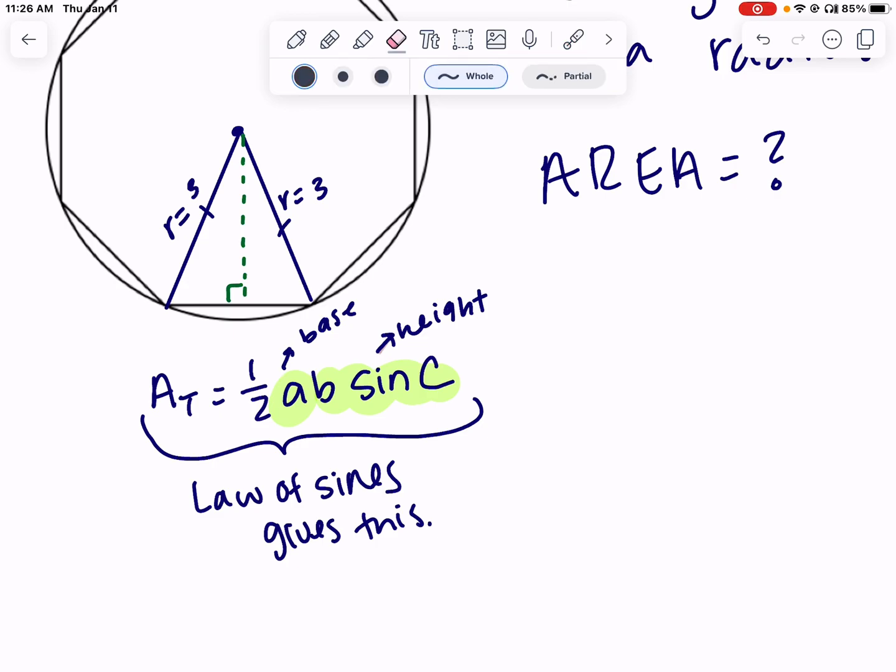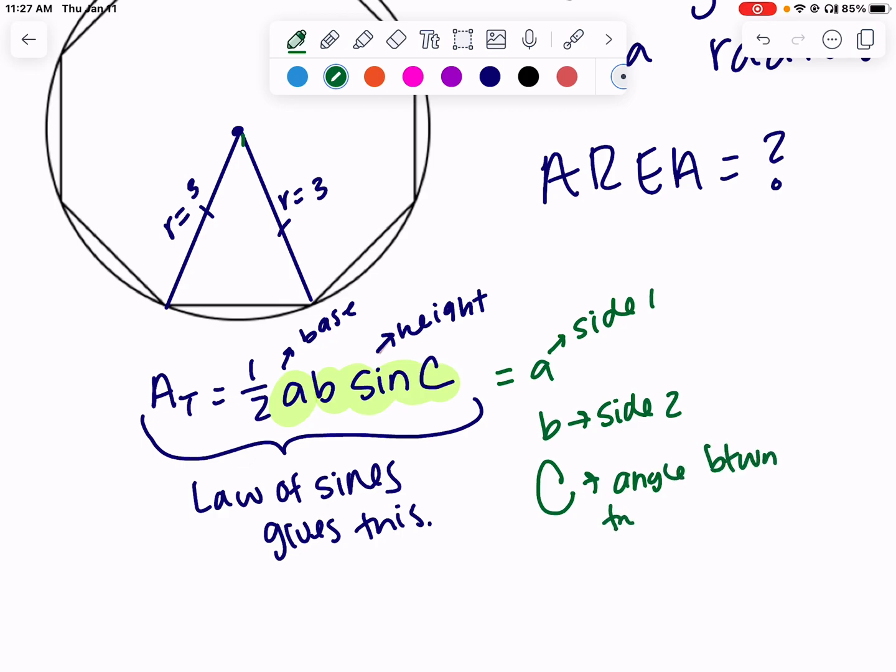To think a bit more about this formula: I told you that a represents the base of the triangle, and b sine c represents the height. Another way to think about this is that a is one side of your triangle, b is another side of your triangle, and c is the angle between the two sides.